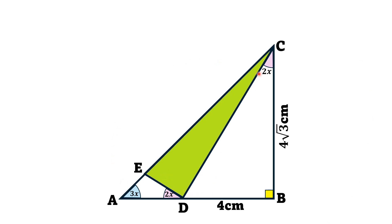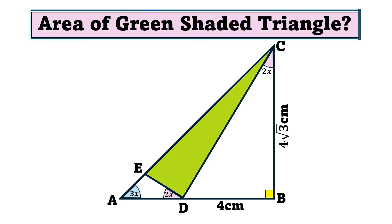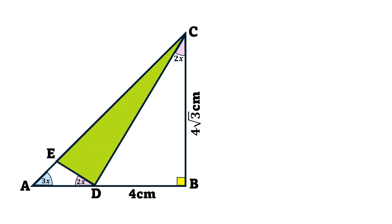By this limited data, we have to find the area of this green shaded region. This region is a triangle and we have to find its area. Moving toward the solution, we consider triangle CBD, a right triangle, and using the Pythagorean theorem we want to find CD, which is the hypotenuse.